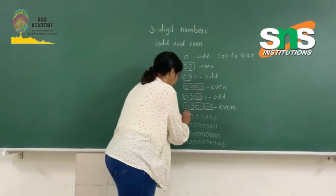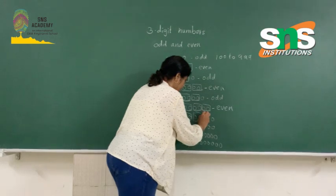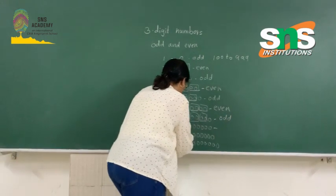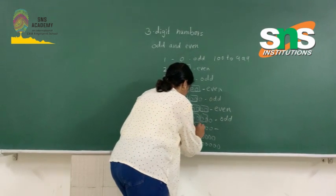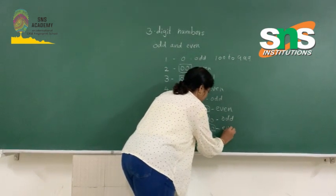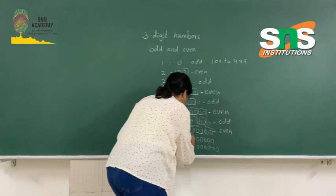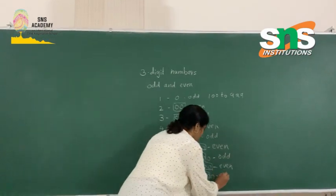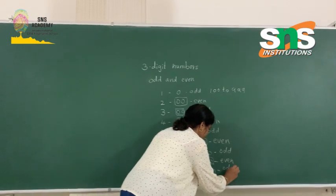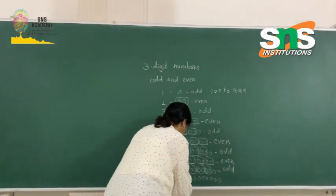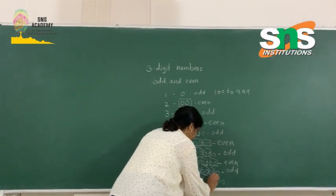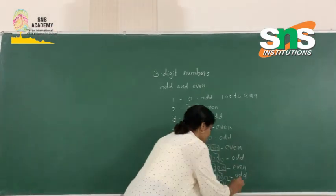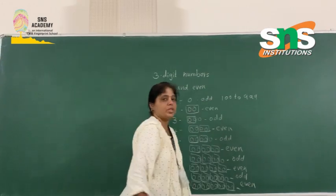For number 7, after pairing, one bead is remaining, so the number 7 is odd. For number 8, I can make all beads into pairs, so number 8 is an even number. For number 9, after pairing, one bead is left, so number 9 is odd. For number 10, I can make all beads into pairs, so the number 10 is an even number.